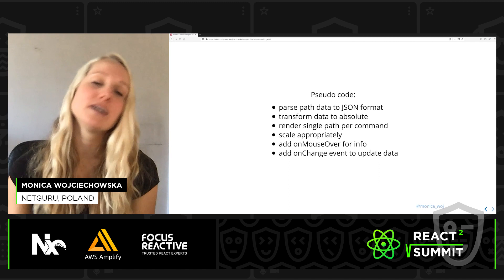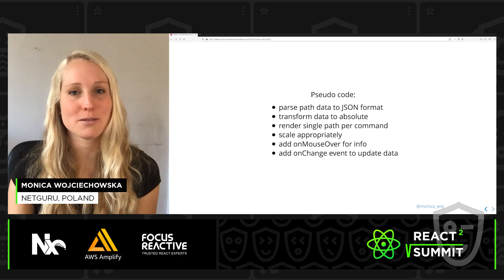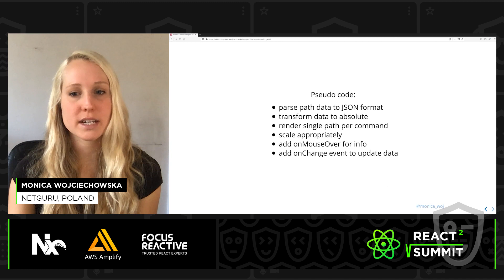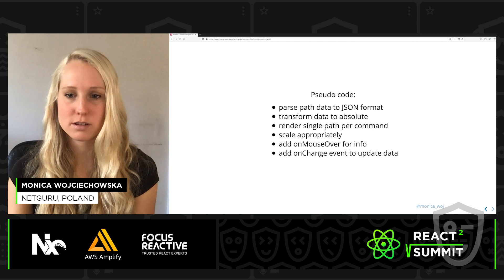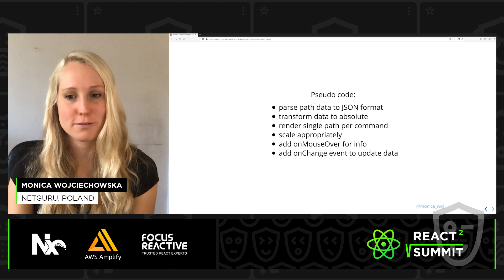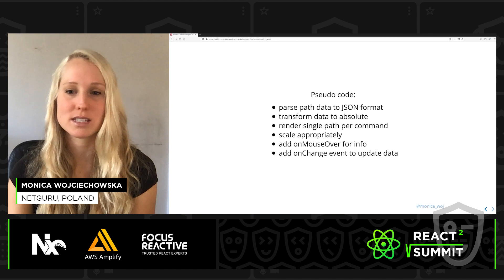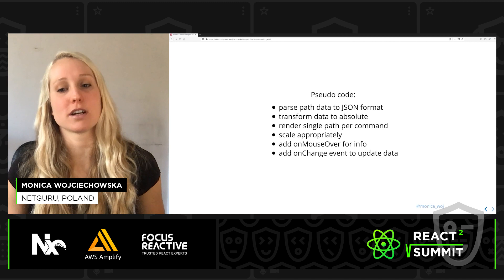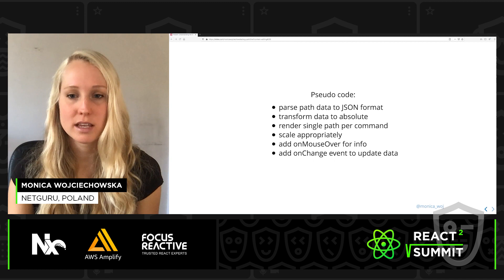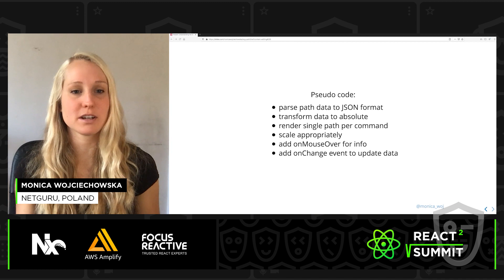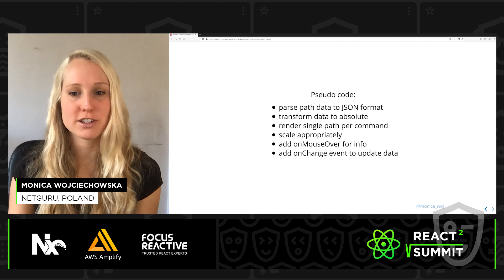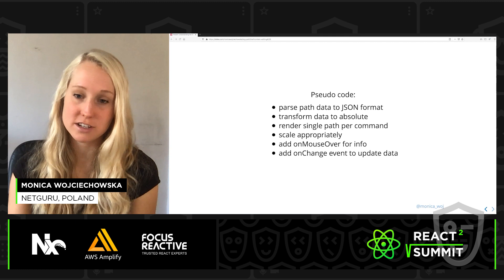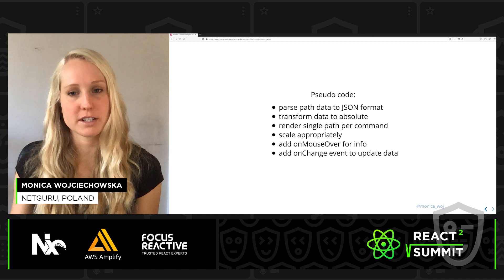In order to see where we are in the path, we first need to break it up into pieces — and we know those pieces are commands. The pseudocode looks as follows: first, parse our path data to JSON format, which is easier to work with than a raw string. Then transform path data to absolute format — uppercase only — so we can get the start and end point of each segment. Then render a single path per command, scaled appropriately, and add events such as onMouseOver to gain information as we hover over a segment, and an onChange event so segments update when we edit the path data.